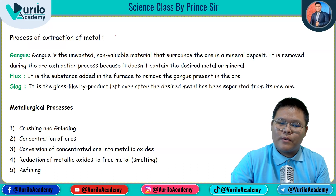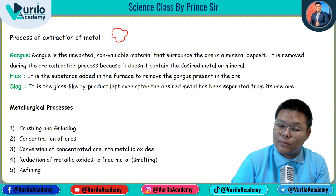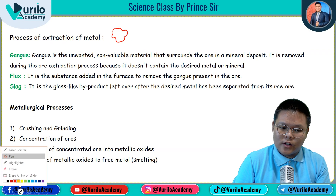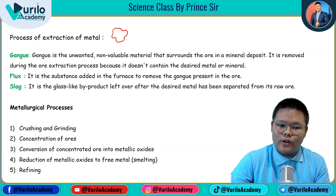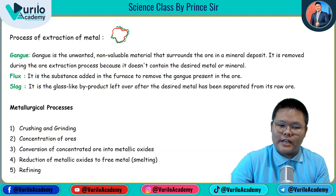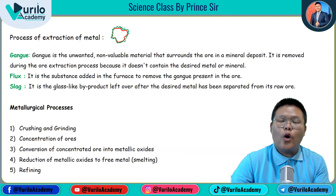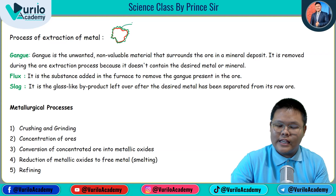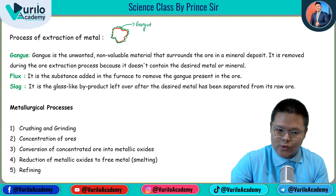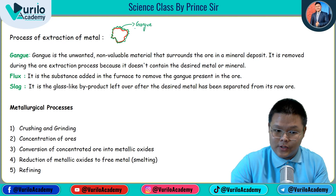We will discuss the mineral deposit. Suppose we have to extract metal from this mineral deposit — shown here in green color. The unwanted material around it is the gangue, shown in green. We need to remove this gangue.